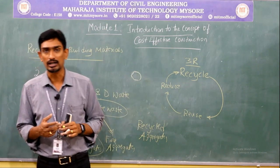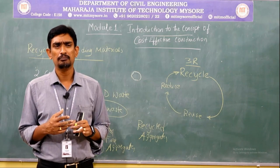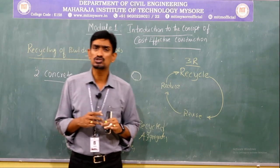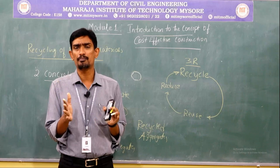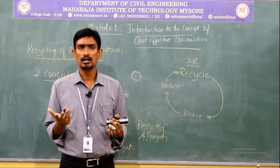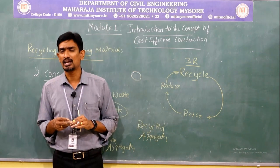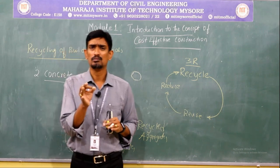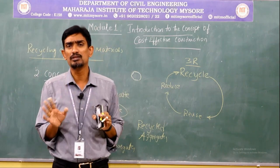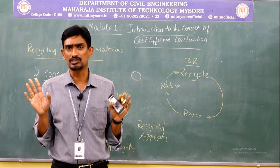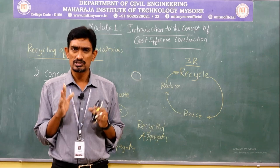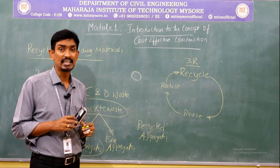Research is also being done on recycled fine aggregate (RFA) to preserve M-sand. A factory in Bangalore (Rock Crystal) produces RCA and RFA from concrete waste, crushing it to proper sizes and selling it commercially. Research shows the strength difference between natural aggregate concrete and recycled aggregate concrete is a maximum of 15%, depending on proportioning and concreting methods.